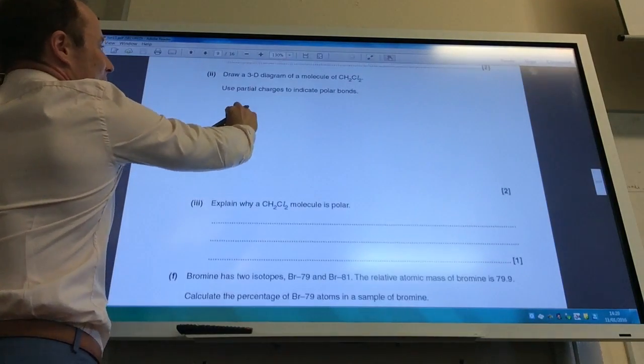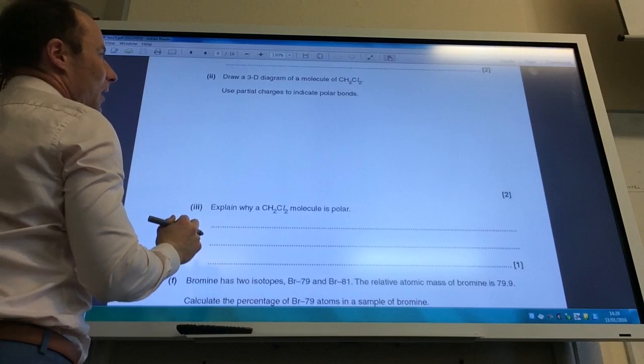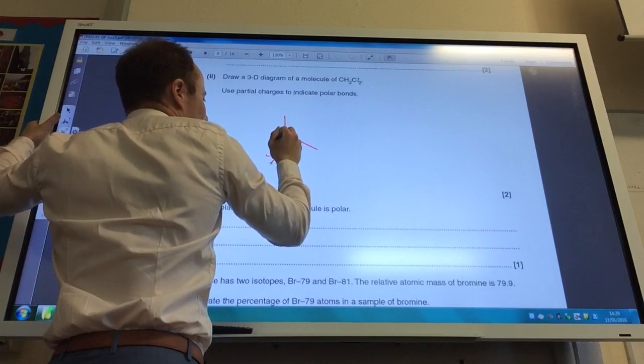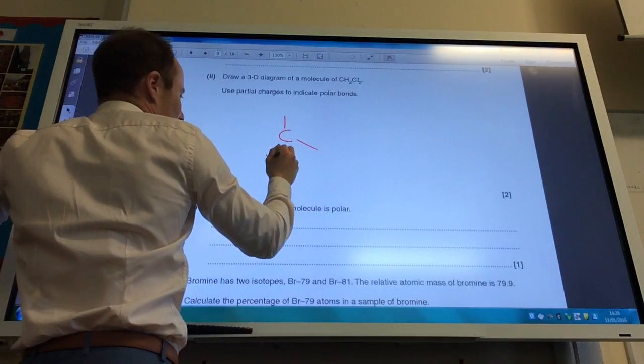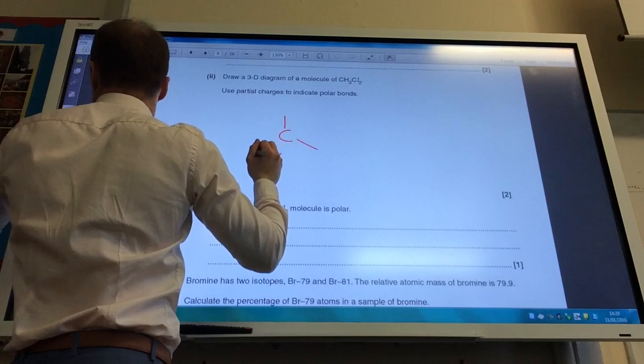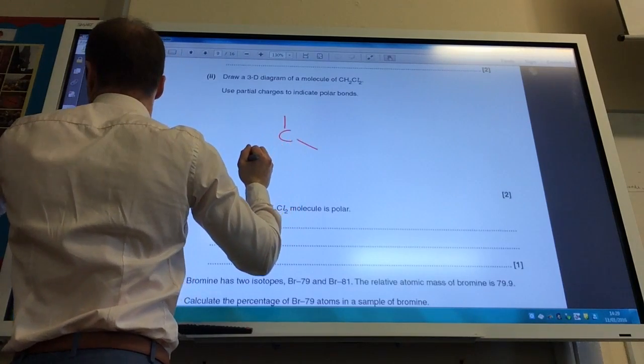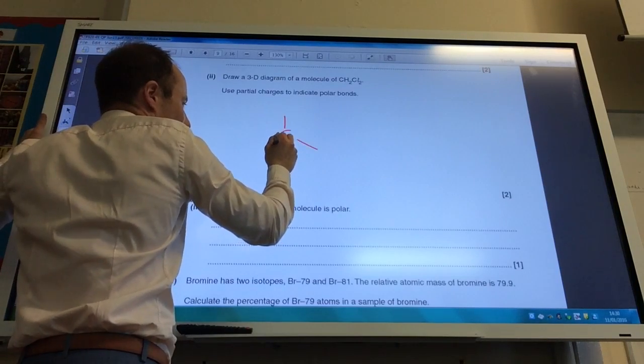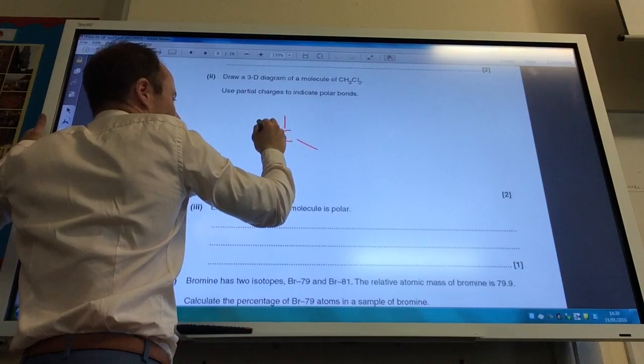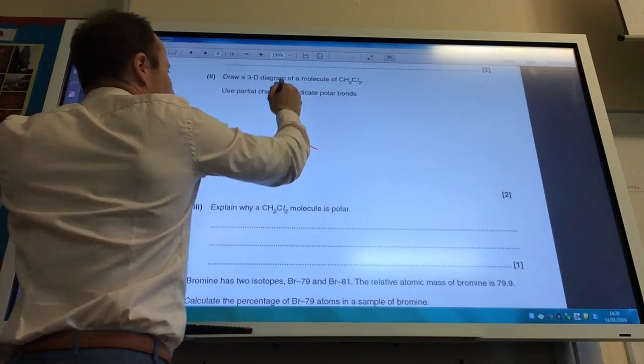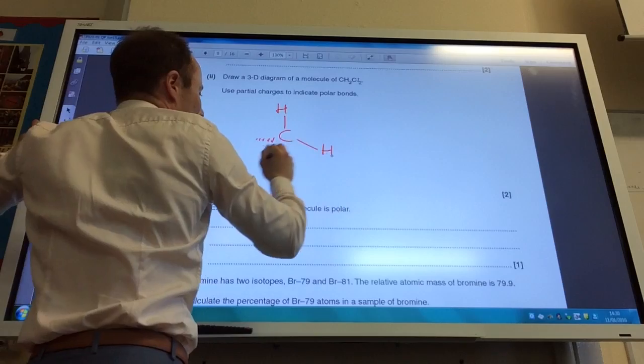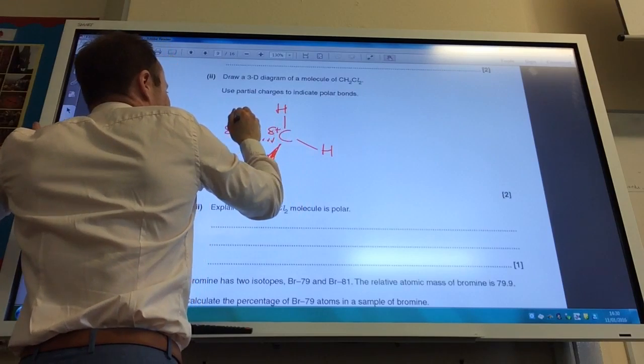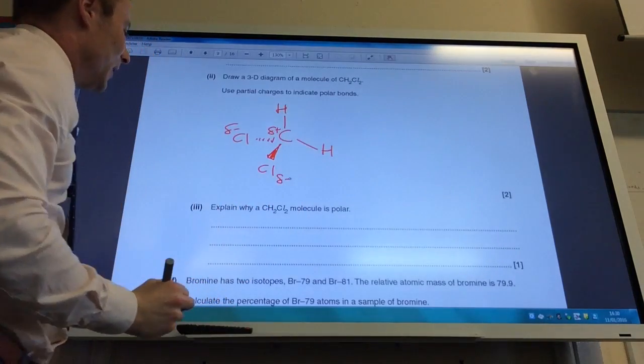Draw a 3D diagram of a molecule of CH2Cl2. So you've got your two bonds there. Then you have your wedge coming out like so. And then you have your dash going back. Doesn't matter which order you put these in. You've got two H's and two Cl's like so. Carbon will be delta positive and chlorine will be delta negative like so.